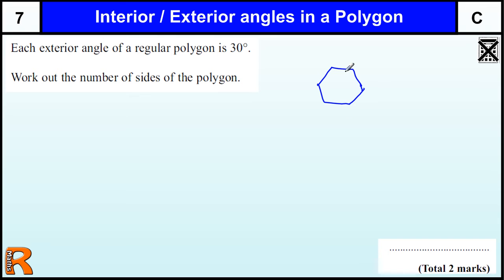A regular one means all the angles are the same, all the sides are the same. And an exterior angle is, if I draw a line coming up from one of the sides, then the exterior angle is this angle from the side to that extended line. That would be the same all the way around - all these exterior angles are the same.